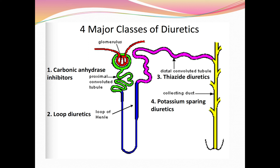There are four major classes of diuretics. In human anatomy and physiology, you will have studied that nephrons are the structural units of the kidney — approximately one million nephrons are present in each kidney. The nephron has four parts: glomerulus, proximal convoluted tubule, loop of Henle, and distal convoluted tubule and collecting duct.